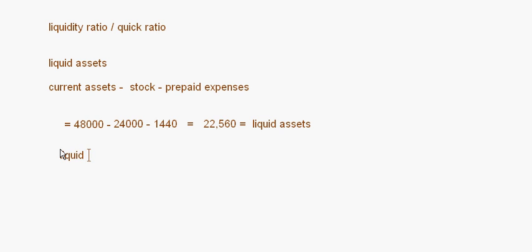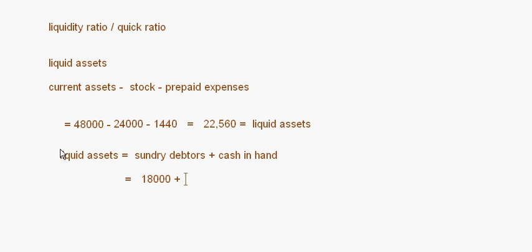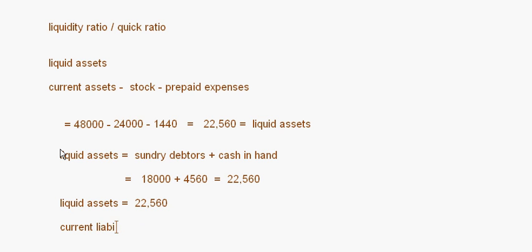Alternatively, liquid assets can be calculated by directly adding the liquid items: Sundry Debtors plus Cash at Bank = 18,000 plus 4,560 = 22,560. Both methods give the same answer. So liquid assets = 22,560 and current liabilities = 48,000.